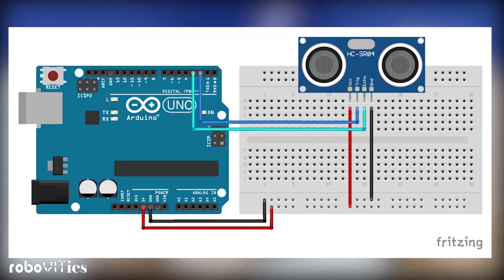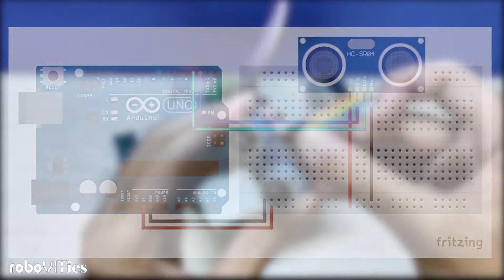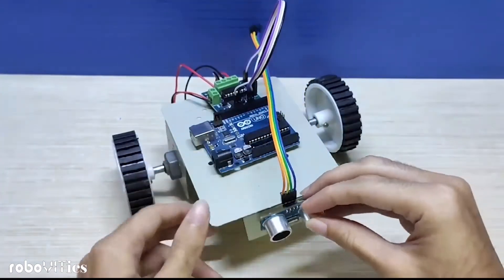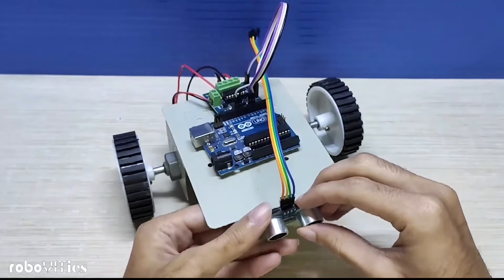Once the female part connections are made, we are going to place our ultrasonic sensor on the bot forward side using a double-sided tape.